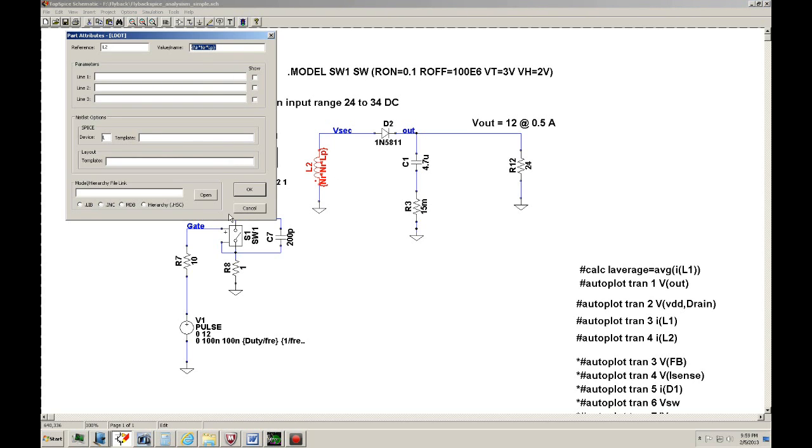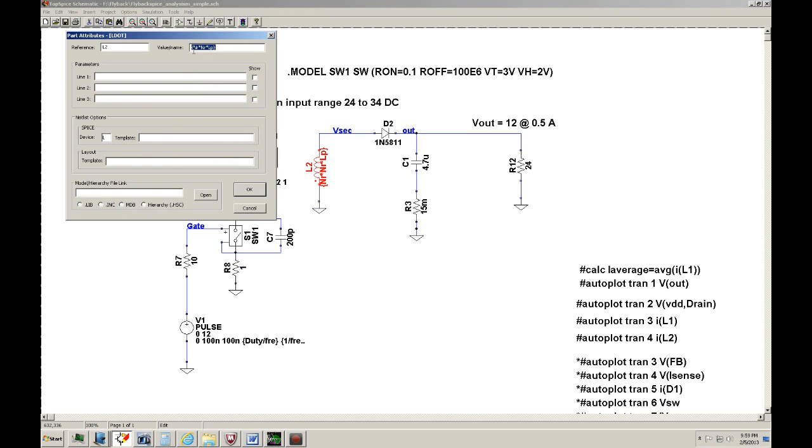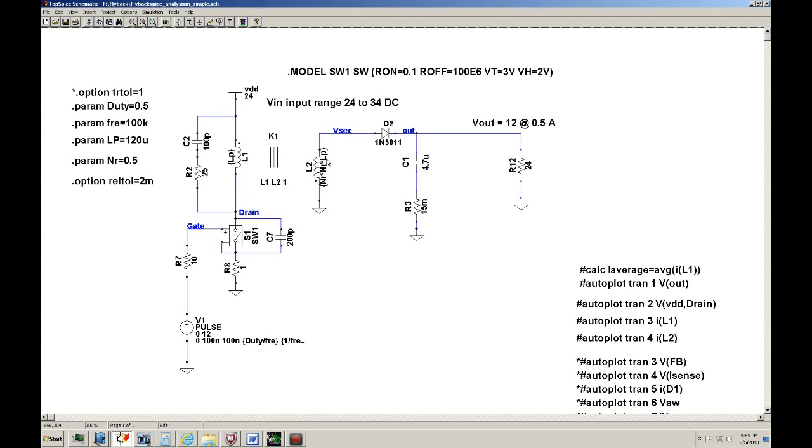And then L2, which is the secondary, what I'm doing is I have the curly brackets, and then I define NR times NR times LP, close curly brackets. So the curly bracket tells SPICE that it's going to be a parameter. So you have to define what NR is, and you have to define what LP is. So that's what these statements are.